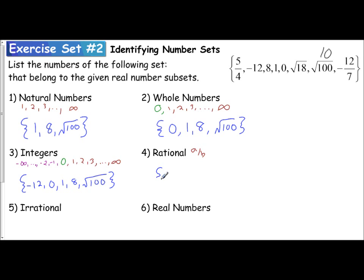So I have negative 12, then negative 12 sevenths, then I have 0, 1, 5 fourths is greater than 1, and then 8, and then square root of 100. And that's a list of my rational numbers.